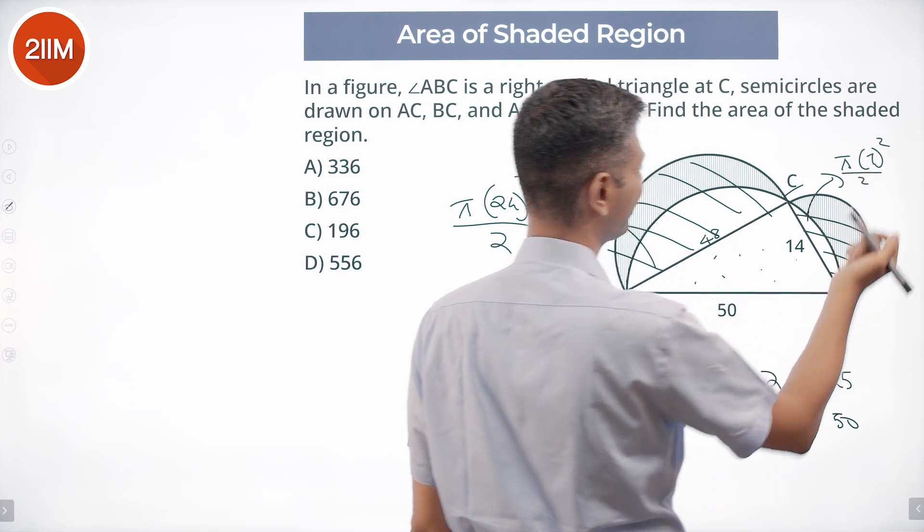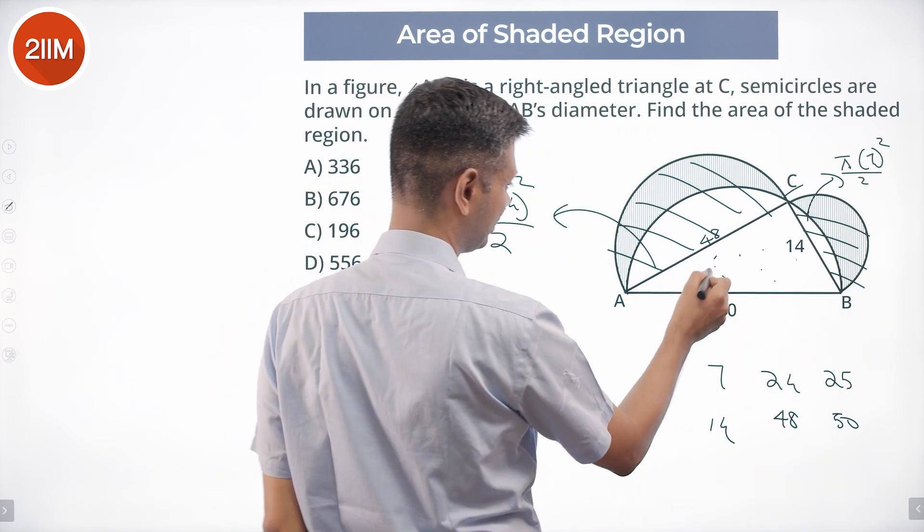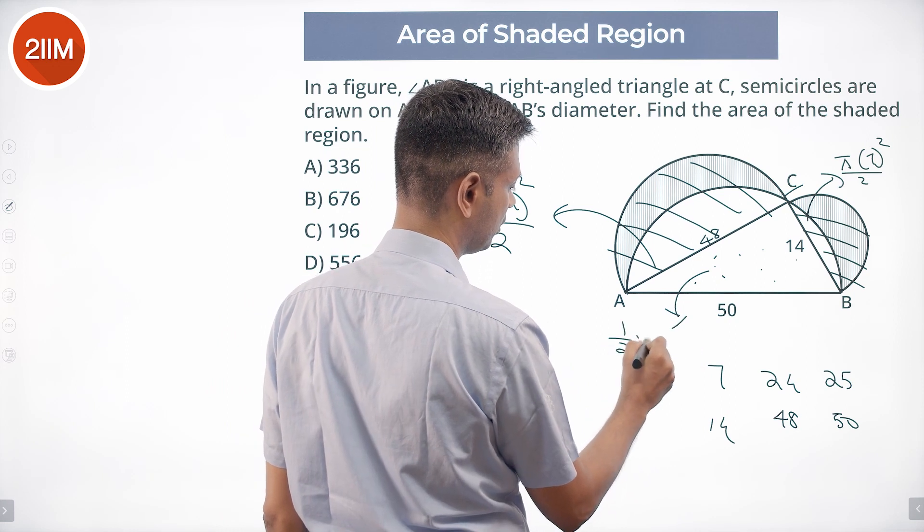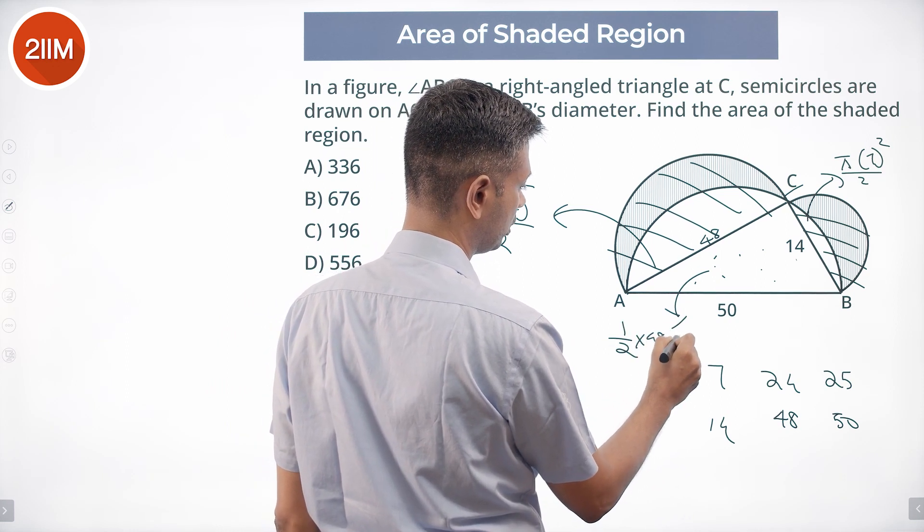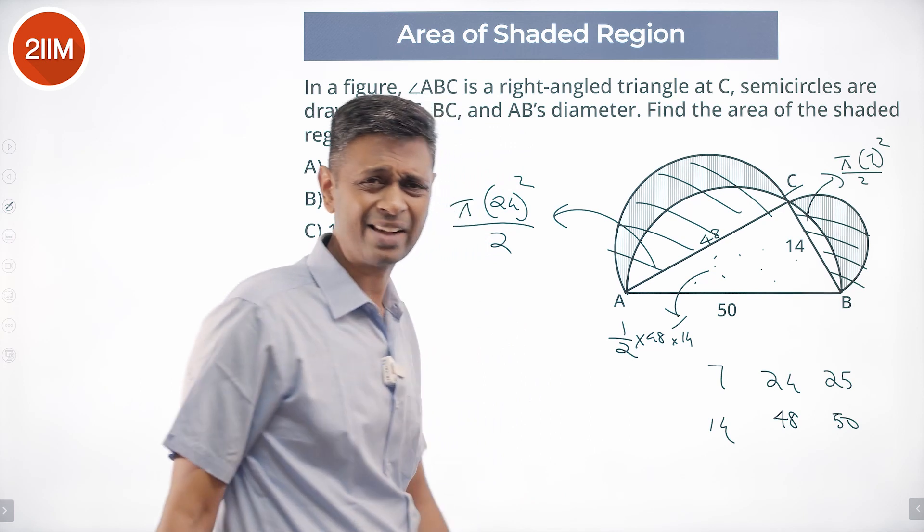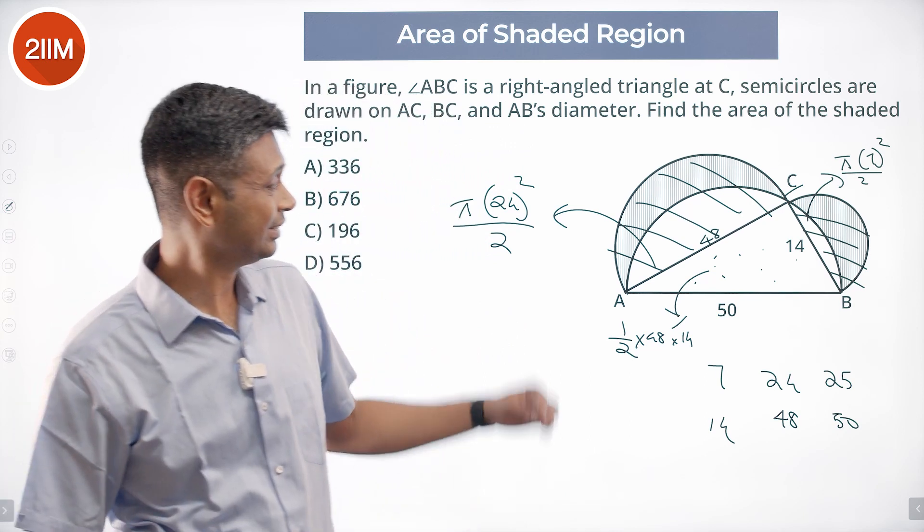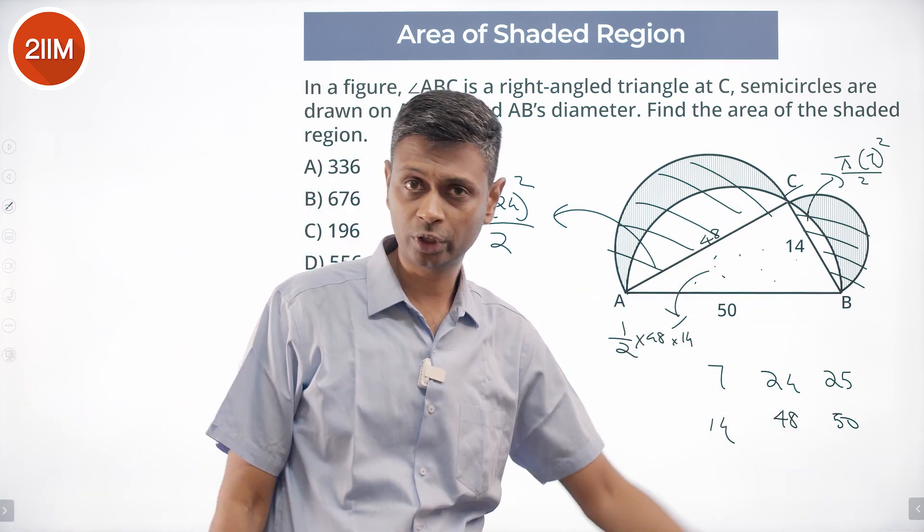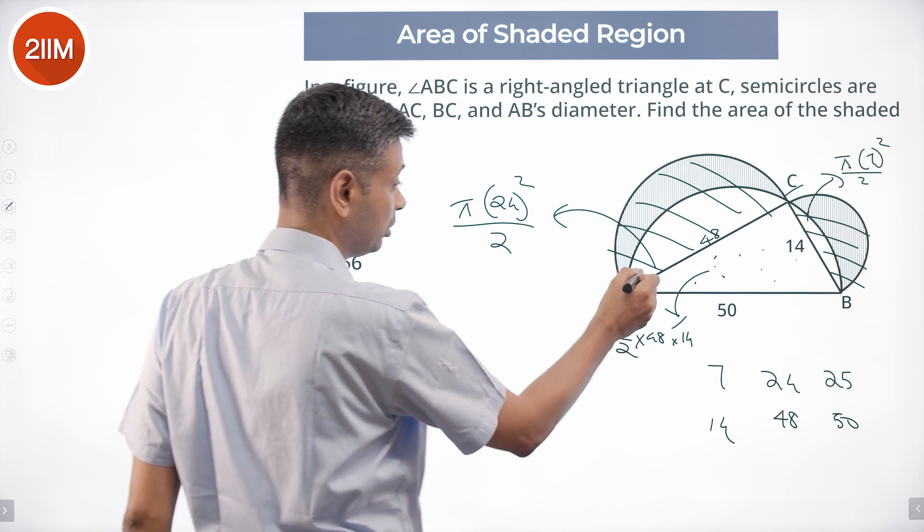This is half times 48 times 14, half times base times height for a right-angled triangle. This angle is 90 degrees. 48 and 14. Area of this semicircle...